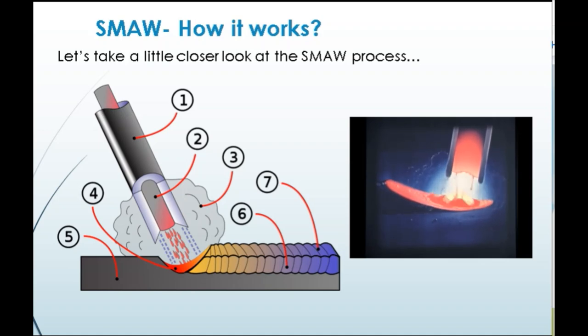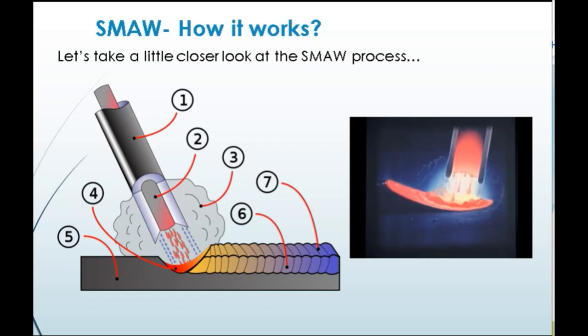As we can see in the right-hand side video, the molten metal is being transferred to the weld pool in the form of small droplets. The shielding gases are visible too, produced by the burning of the coating elements. The red molten area shows the weld puddle.